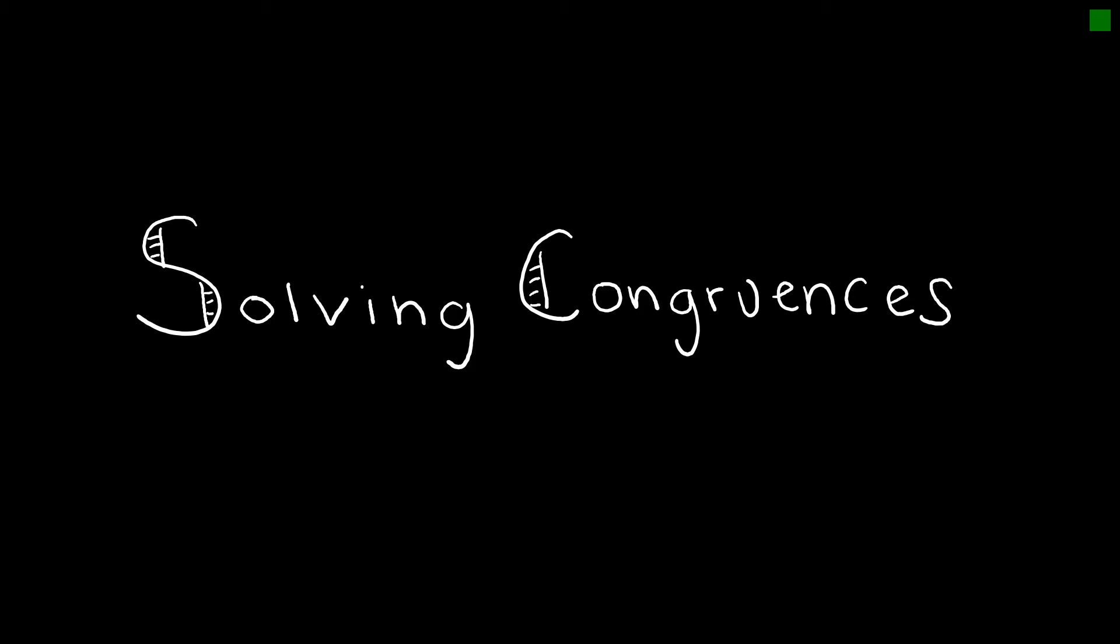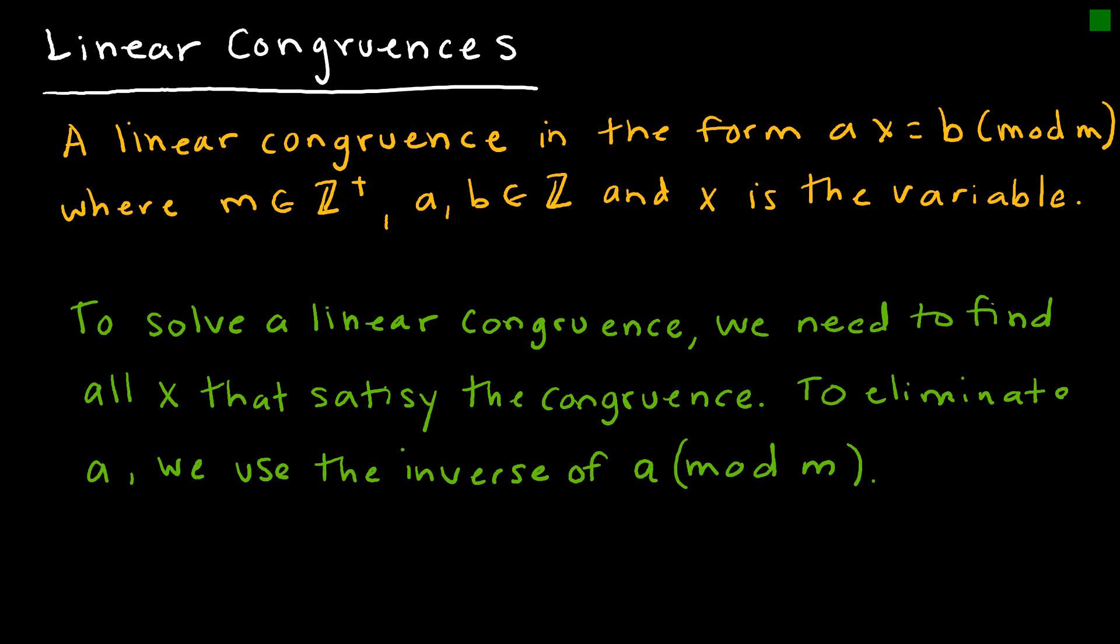In this lesson, we will look at solving congruences. So a linear congruence is in the form AX equals B mod M. So we're looking at modular division. And what we haven't seen up to this point is we haven't seen a value A in front of our expression.